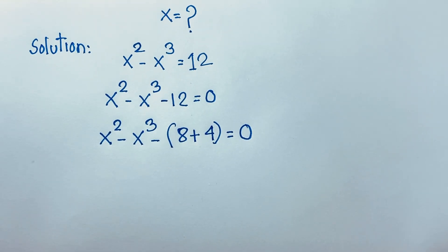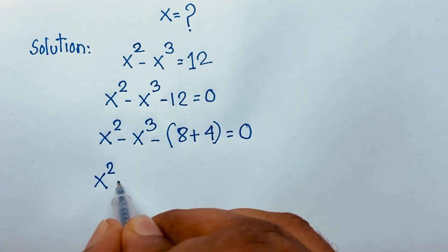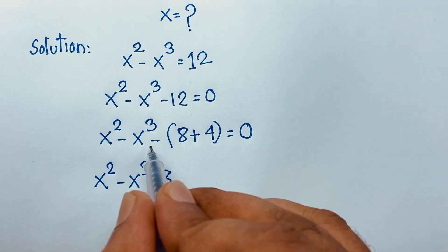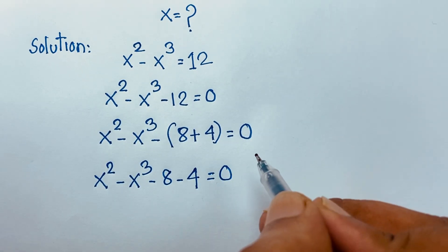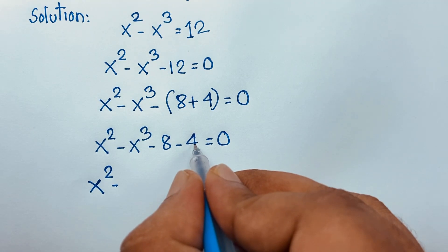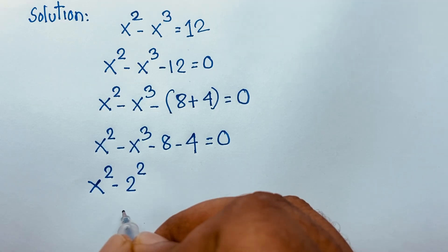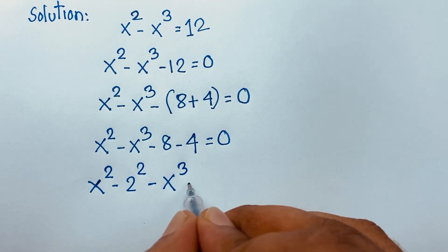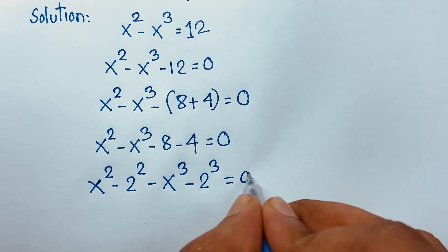Now you can see here: x to the power 2 minus x cubed, and negative 8 plus minus 4, equal to 0. Here x to the power 2, and if I take this 4, it will be 2 to the power 2. Then negative x cubed, and negative 8 — 8 is 2 to the power 3 — equal to 0.